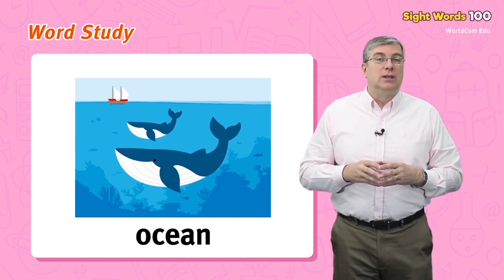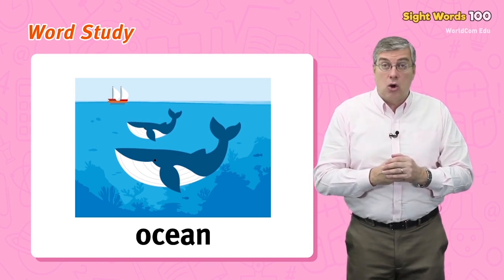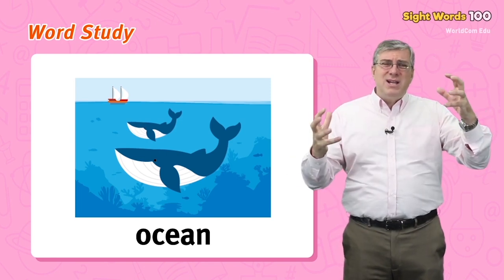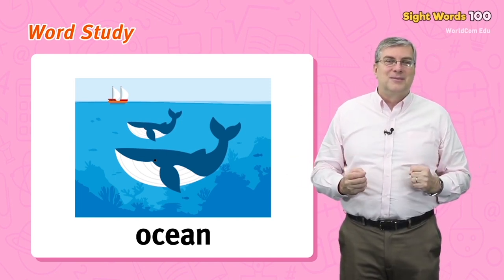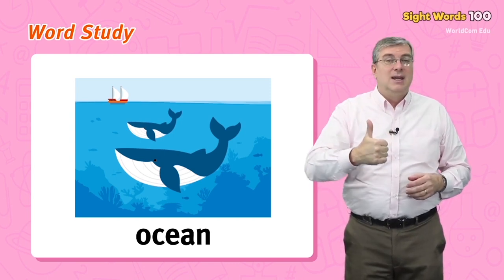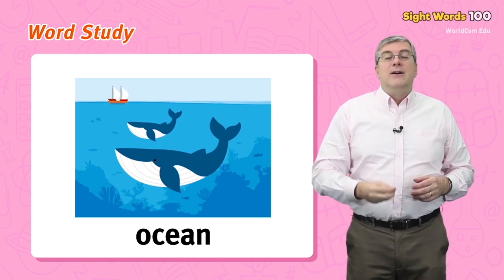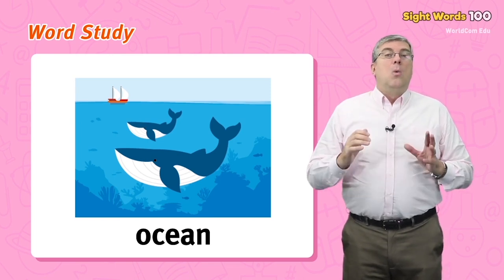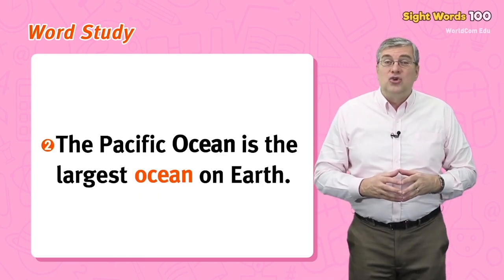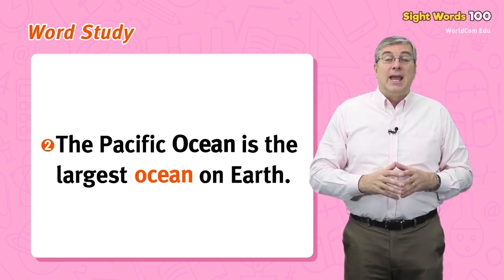Next we have ocean. Did you know that the surface of the earth is mostly ocean? An ocean is a really big area of water. Most people say there are four oceans: the Pacific, the Atlantic, the Indian, and the Arctic. For example, whales live in the ocean, or the Pacific Ocean is the largest ocean on earth.